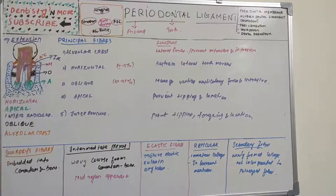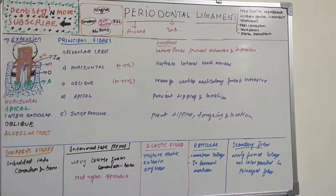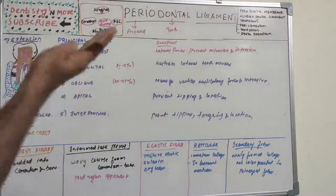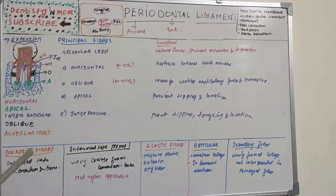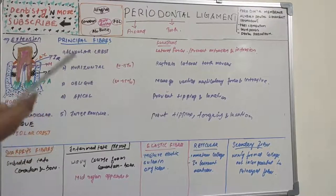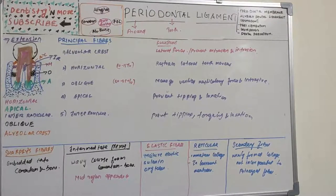Periodontal principal fibers are collagenous in nature and follow a wavy pattern, which can be seen when viewed in longitudinal section. They are thought to contribute to the regulation of mineralization and tissue resorption at sites of increased biomechanical strain. In orthodontic movement, when there is strain and stress, there will be remodeling and changes in the periodontal ligament fibers.